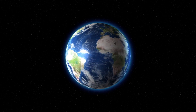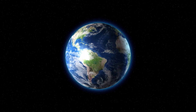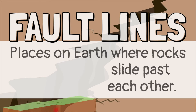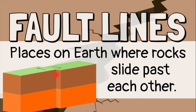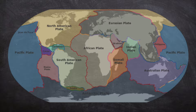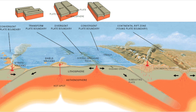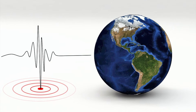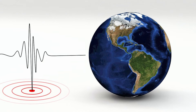An earthquake is the earth's way of releasing stress. Earthquakes usually happen along fault lines — places on earth where rocks slide past each other. This usually happens at the edge of a tectonic plate. There are about 20 tectonic plates along earth's surface that constantly move in different directions. As these plates move, they cause the earth's crust to shift and break. When the crust breaks, waves of energy are released and move through the earth.